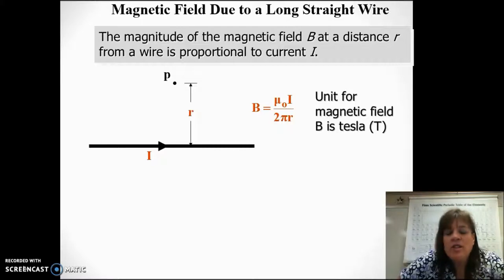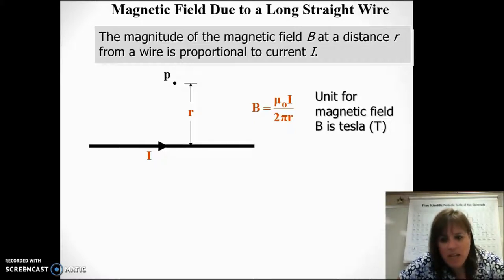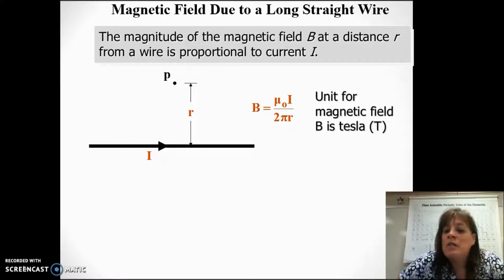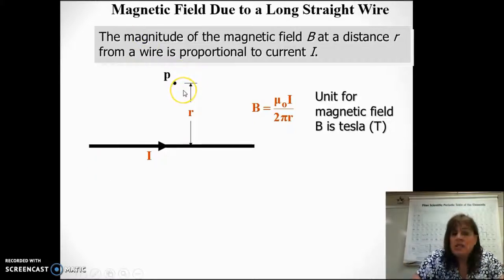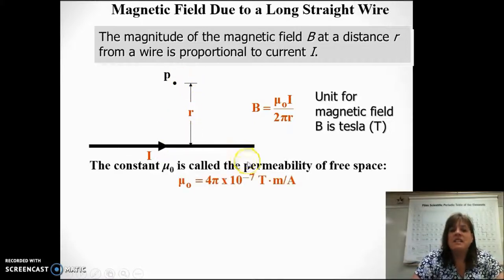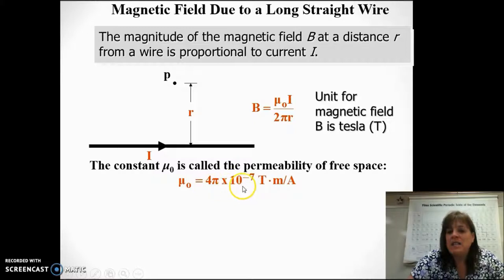The actual equation — and this is only for a long straight wire — is that the magnetic field, and remember the unit of magnetic field is Tesla, after my favorite all-time scientist Nikola Tesla. The equation for a long straight wire is: B equals this constant times the current in amps divided by 2πr, the distance that the point we're interested in is from that current-carrying wire. This constant is called the permeability of free space, mu sub-naught, and it's equal to 4π times 10 to the negative 7 Tesla·meters per amp.